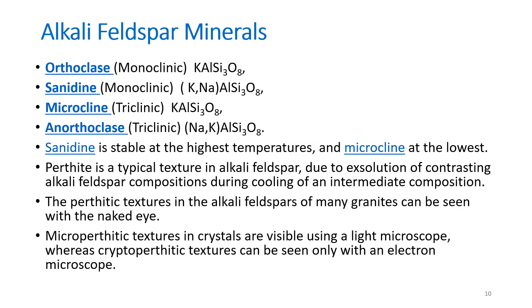Alkali feldspar minerals include orthoclase (KAlSi₃O₈) and sanidine, which belongs to the monoclinic system with composition potassium-sodium aluminosilicate. Microcline is potassium aluminosilicate belonging to the triclinic system. Anorthoclase is also triclinic with composition sodium-potassium aluminosilicate. Sanidine is stable at the highest temperatures (high-temperature potassium spar), while microcline is formed at the lowest temperatures. Perthite is a typical texture in alkali feldspar minerals.